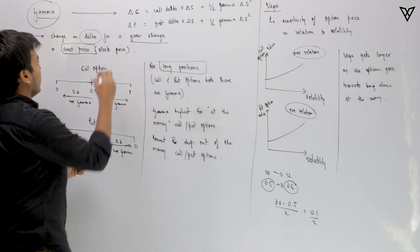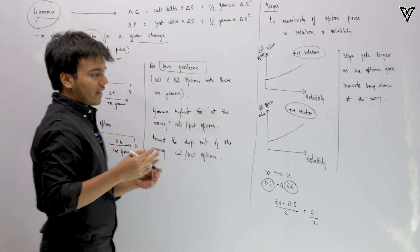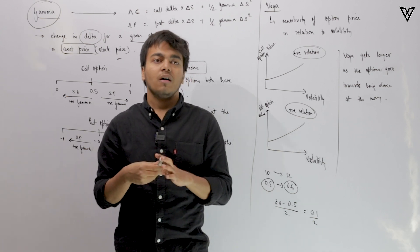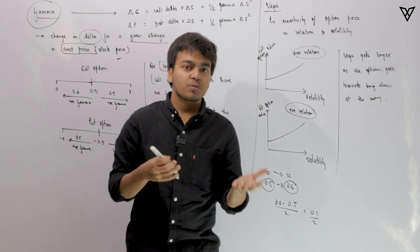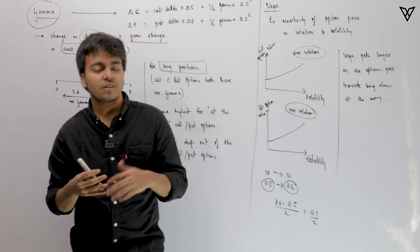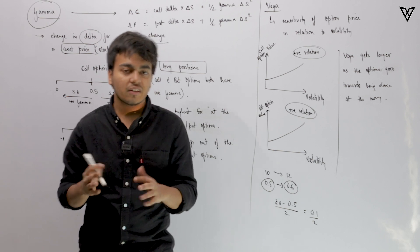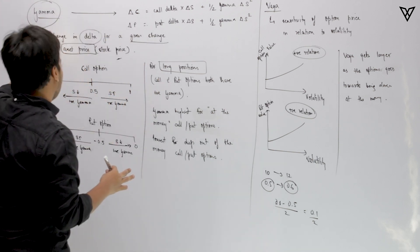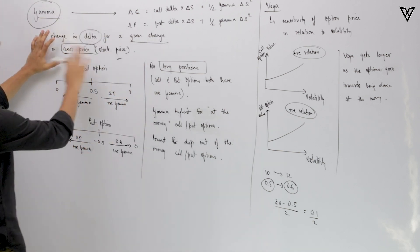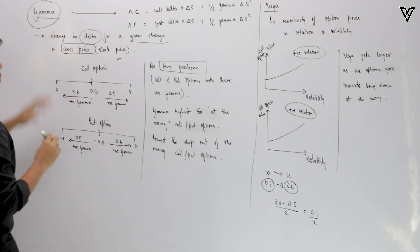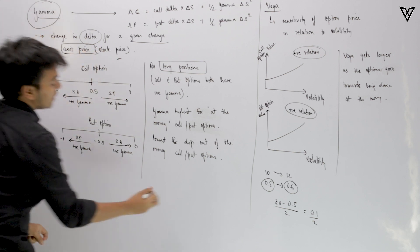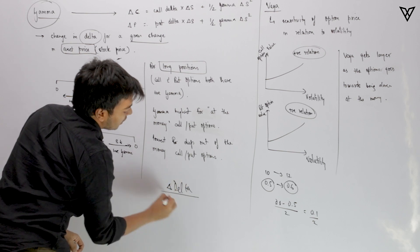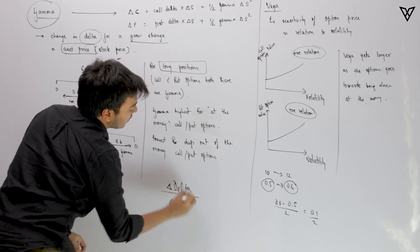We will understand what values gamma can take, and whether for a call option it has a positive value or whether for a put option it has a positive or negative value. The basic idea is that gamma witnesses the change in delta divided by change in asset price.